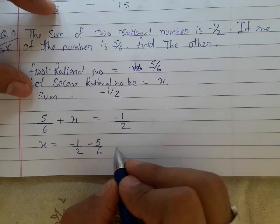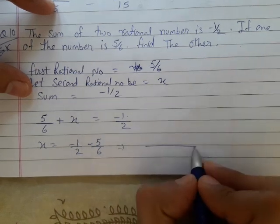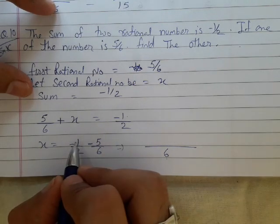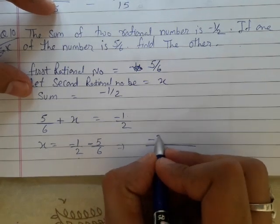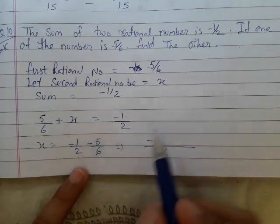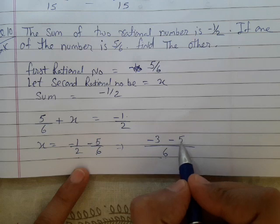I will take LCM of 6 and 2. LCM of 6 and 2 is 6. 6 divided by 2 equals 3, and 3 multiply by minus 1 will become minus 3. 6 divided by 6 equals 1. 1 multiplied by minus 5 equals minus 5.